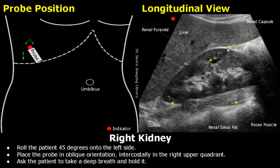This hyperechoic border of the kidney is the renal capsule. The hyperechoic outer parenchyma is the renal cortex. The inner region is more hypoechoic — this is the medulla, consisting of renal pyramids. The central hyperechoic region is the renal sinus fat.